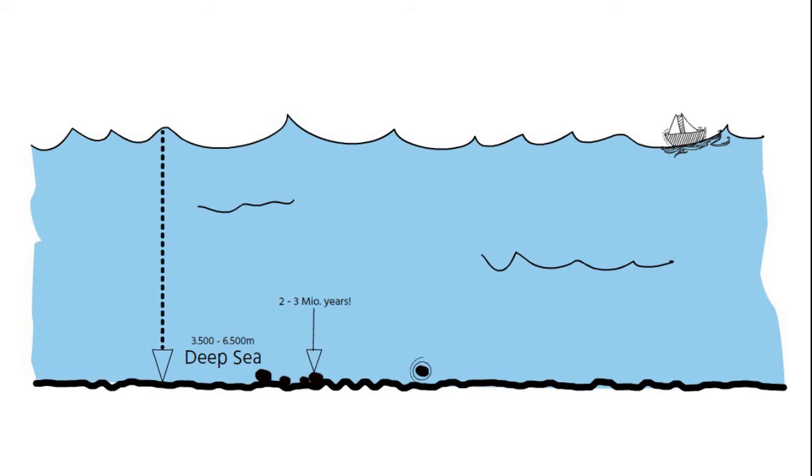They form through the aggregation of layers of iron and manganese hydroxides around a central particle, such as a shell, a shark tooth or a small rock fragment. Dissolved metal compounds, like manganese or iron oxides and other numerous trace metals, in the seawater or in the pore water of the seafloor sediments, precipitate over time around this nucleus. These compounds form layers in more or less crystallized forms.